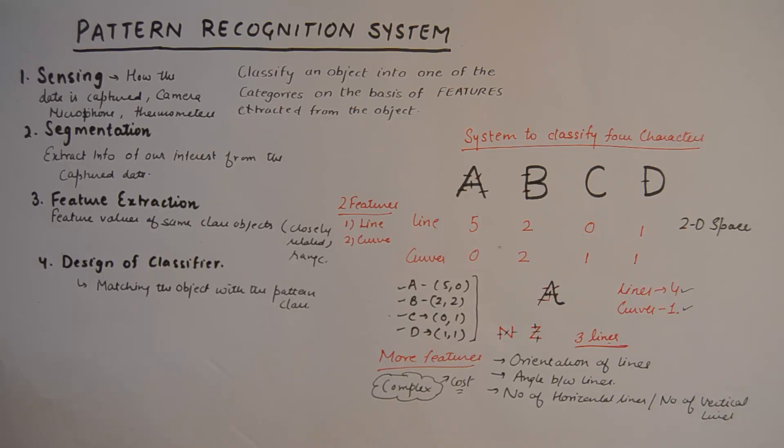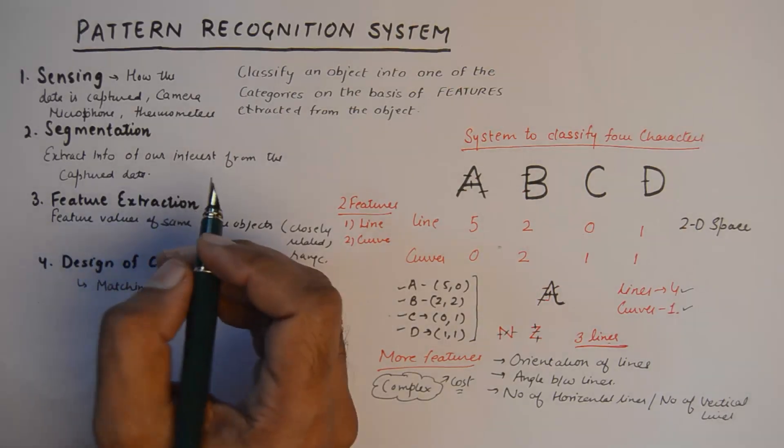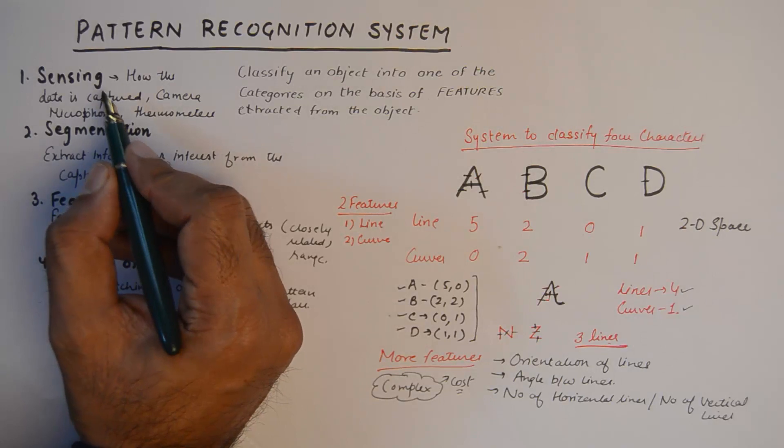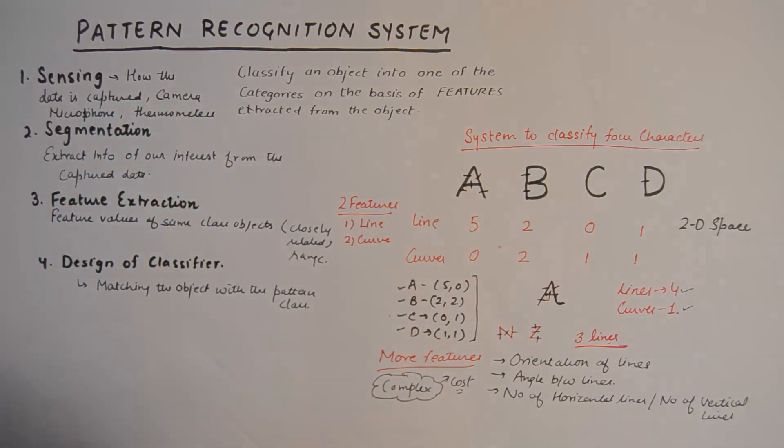The blocks are the sensing block. The first block for a pattern recognition system is the sensing block. It will sense how the data is captured. For example, a camera could be a sensing device for a pattern recognition system for facial recognition. A microphone, a thermometer can be sensing devices.